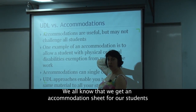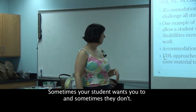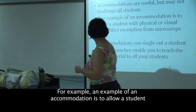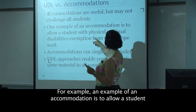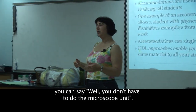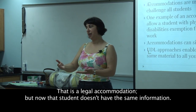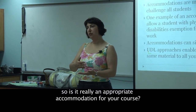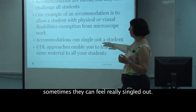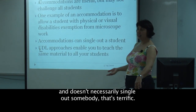We all get an accommodation sheet for students at the start of a semester and are supposed to do certain things. But the required accommodation might not be the best thing for the student. For example, allowing a student with physical or visual disabilities an exemption from microscope work is a legal accommodation — but that student doesn't get the same information as everyone else. Also, students sometimes don't use their accommodations because they feel singled out. If you can use UDL in a way that includes all students without singling someone out, that's terrific.